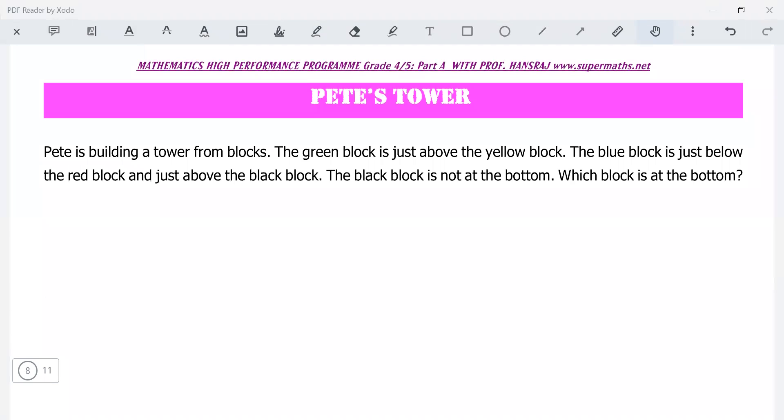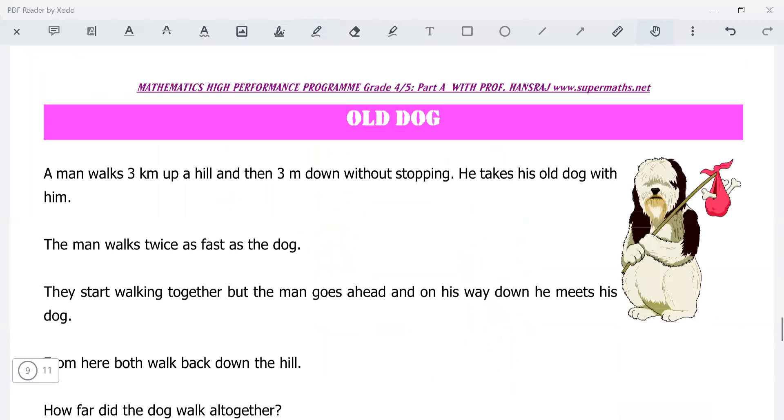Pete is building a tower from blocks. The green block is just above the yellow block. Green, just above the yellow. The blue is just below the red. We don't have a red there yet, but let's just draw a red here. The blue is just below the red, so there's a blue here, and above the black. It's above the black. The black is not at the bottom. Which block is at the bottom? The drawing will give us an idea there.